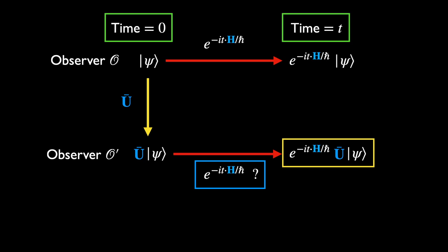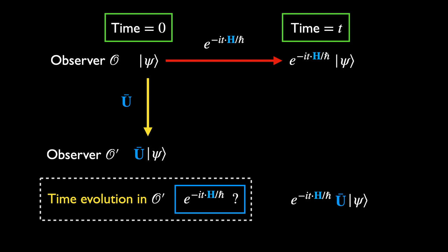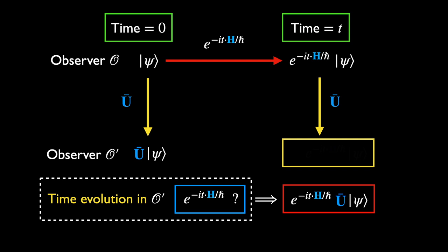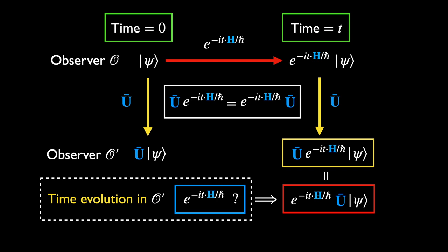Looking at this from the viewpoint of O-prime, if the same time-evolution operator applies also in this reference frame, we are led to a final state. For the moment, let's put a question mark on this time-evolution rule in the transformed frame. Later, it will be found that this actually leads to contradictory results. To be consistent, this final state has to agree with the one obtained by applying U-bar to the final state described by O, which converts it to a description by O-prime. The equality of these two states for any arbitrary state psi leads to an operator equation.